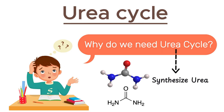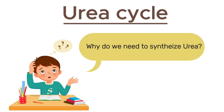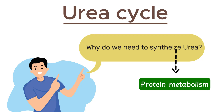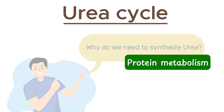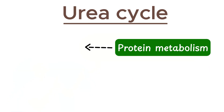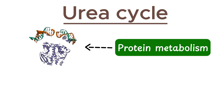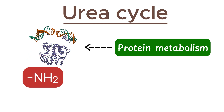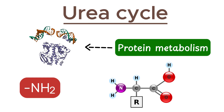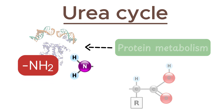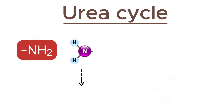It's a compound that looks like this. And why is there even a need to synthesize urea? The answer lies in protein metabolism — the breakdown of proteins. When proteins digest, they release amino groups, because proteins are made up of amino acids, and when these amino acids break down, they release an amino group. This amino group is released in the form of a compound called ammonia.